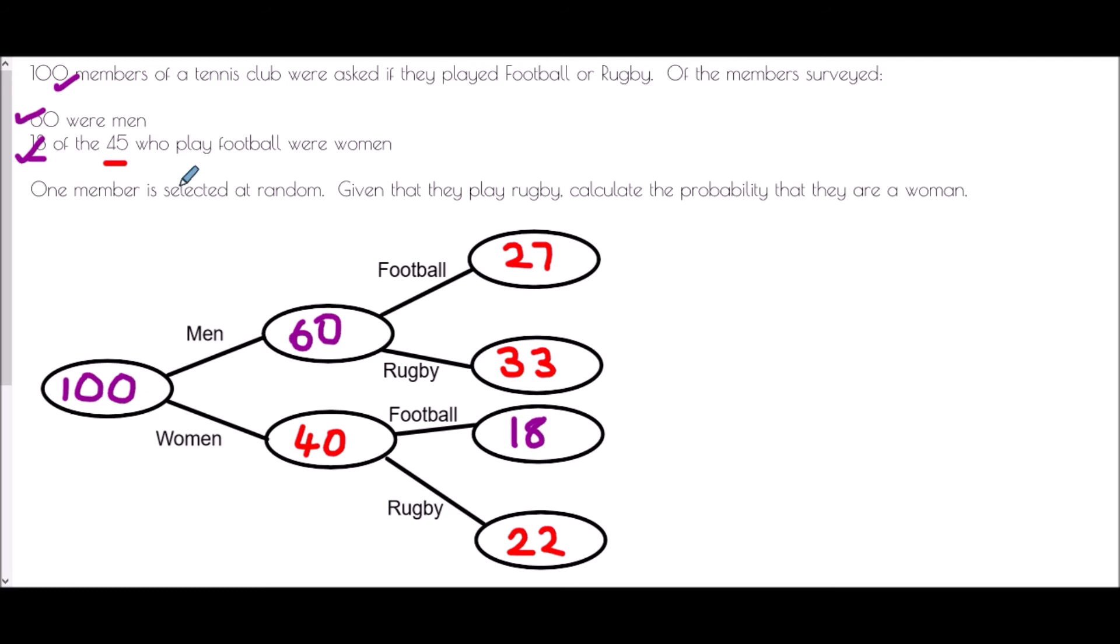But it hasn't yet finished the final question. It said, given that they play rugby, calculate the probability that they are a woman. So the first thing I need to know here is because it's given that they play rugby, I want to know how many people play rugby? Well, 33 men and 22 women. So in total, 55 people play rugby. So that is what my probability is going to be out of. It asked, what is the probability that they are a woman? Well, the women are 22. So 22 out of 55. Now this one can be simplified. They're both in the 11 times table. And so we could just call that two fifths.